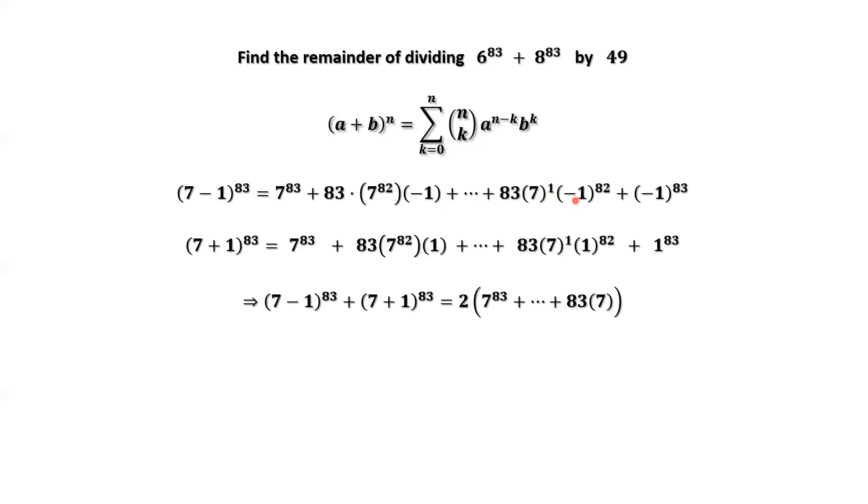This means all the terms before this term containing 49 as a factor. This means inside of this parenthesis, all the terms are divisible by 49 except the last one.